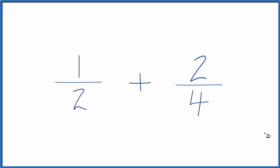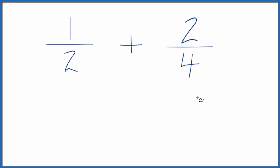There are two ways to do this. One way is we could simplify 2 fourths because we can divide 2 into 2 and into 4. If we do that, 2 divided by 2 is 1, 4 divided by 2 is 2. Then we already have 1 half here so we have the same denominators. We just add the numerators.